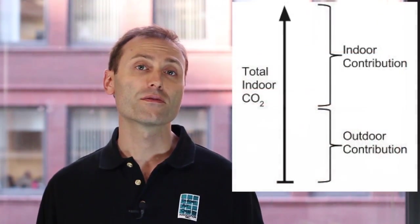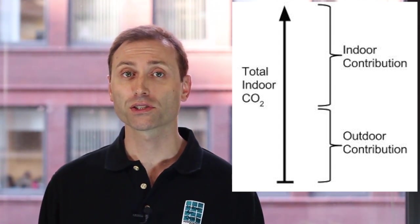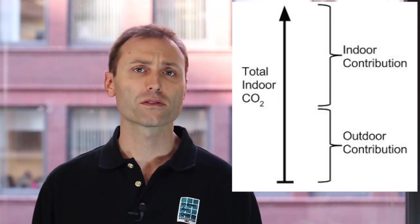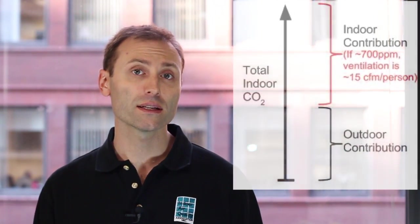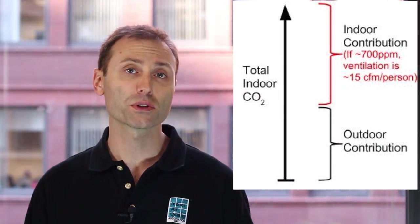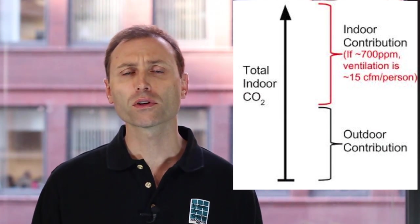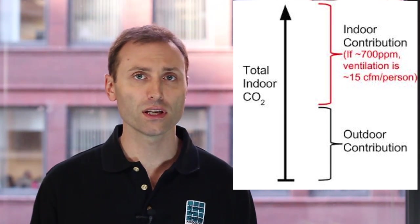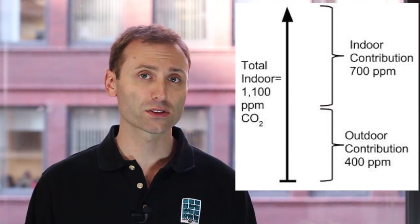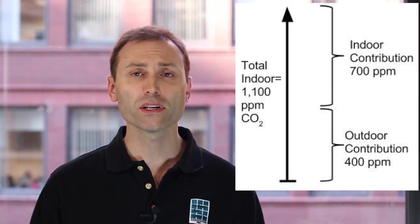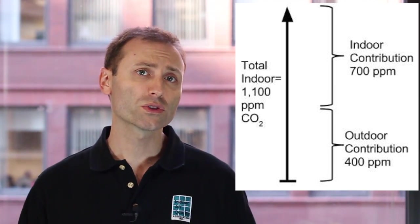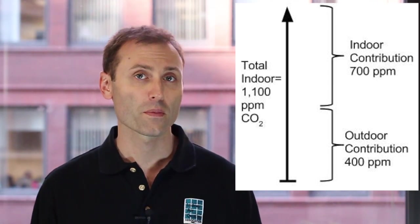The CO2 concentrations inside occupied buildings will exceed the outdoor levels. If we subtract the outdoor background concentration from the indoor concentration, we'll be left with what I call the indoor contribution. Mass balance equations can be used to relate an indoor contribution of 700 ppm with an often quoted rule of thumb ventilation rate of 15 cubic feet per minute per person. In other words, if the indoor CO2 concentration is 1100 ppm and we subtract the outdoor concentration of 400 ppm, we have an indoor contribution of 700 ppm.